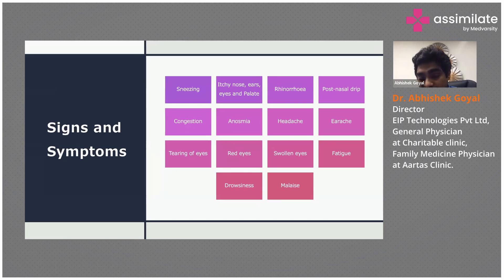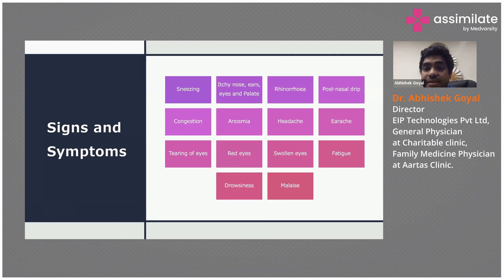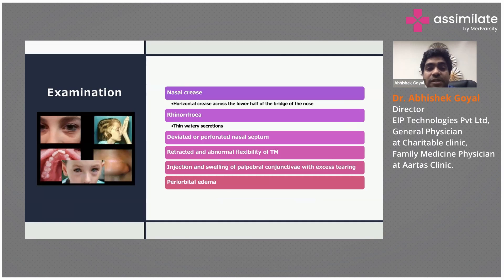The typical signs and symptoms of allergic rhinitis include sneezing, itchy nose, rhinorrhea, post-nasal drip, congestion, anosmia (loss of smell), headache, earache, tearing of eyes, flushing of eyes, red eyes, swollen eyes, periorbital edema, fatigue, drowsiness, and malaise.